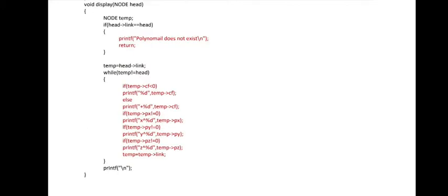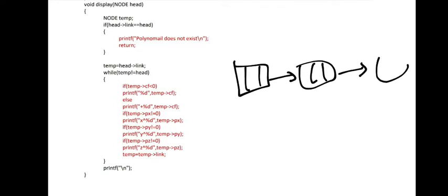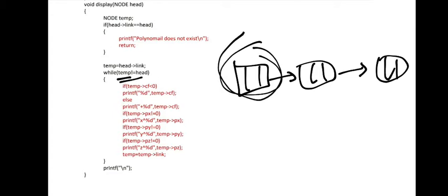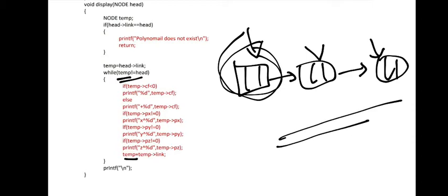The display function — you know this. If there are many nodes, we travel using a while loop: while temp is not equal to head, we visit each node and display its contents, then move to the next using temp = temp->link. temp->link points to the next node, so temp moves forward and prints all the polynomial terms.